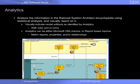IBM Rational System Architect offers lots of ways to analyze the enterprise architecture model, from reports to color-coded matrices to explorer diagrams to analytics, just to mention a few. Here we will get a short overview of the analytic capabilities of Rational System Architect. Rational System Architect Analytics allow you to analyze the information in the Rational System Architect Encyclopedia using statistical analysis and visually reporting on it.